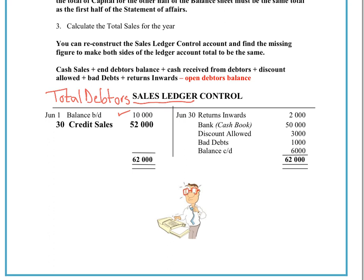At the end of the month, if we knew we still had $6,000 of those debts outstanding, we can fill in all the other pieces of information. In any equation, if you're only missing one piece of information and you fill in all the others, you can find the missing piece. Here we're looking for the credit sales — that's our incomplete record. Returns would come out of the debtors account into returns inwards. When debtors paid us, it would go into the debit side of our cash book. Discounts allowed would also go out of the debtor account, and bad debts would be written off on the credit side.